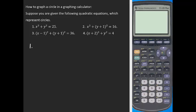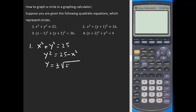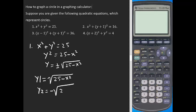We need to convert this to explicit form. Starting with x squared plus y squared equals 25, our first target is to solve for y. We subtract x squared from both sides to get y squared equals 25 minus x squared. Then y must be plus or minus the square root of 25 minus x squared.